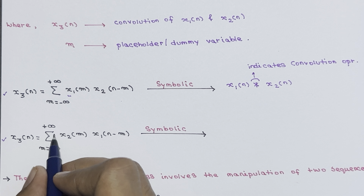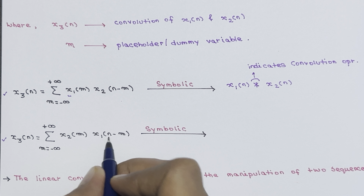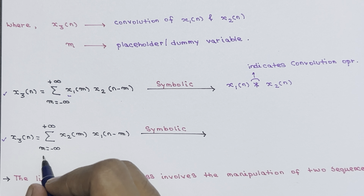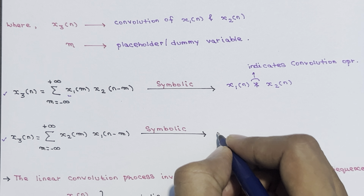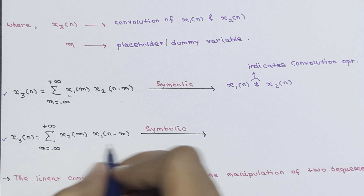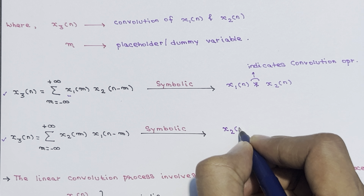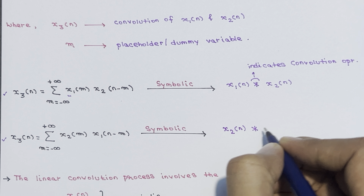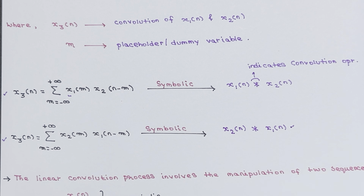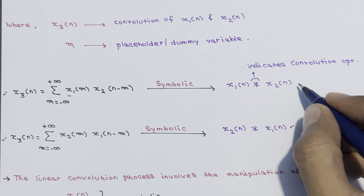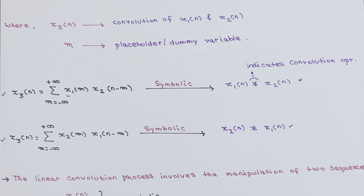For the second expression, x3(n) = summation of x2(m) · x1(n−m) where m ranges from minus infinity to plus infinity, the symbolic representation is x3(n) = x2(n) * x1(n), indicating convolution of x2(n) and x1(n).